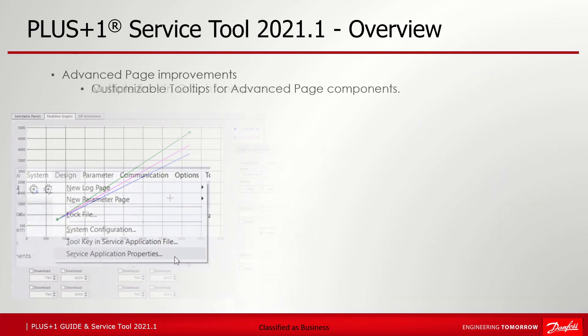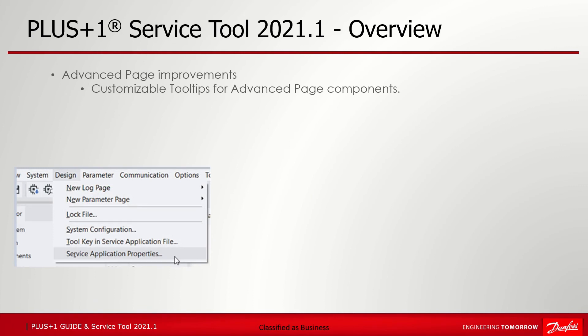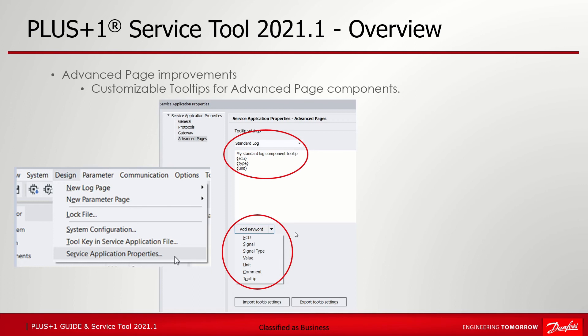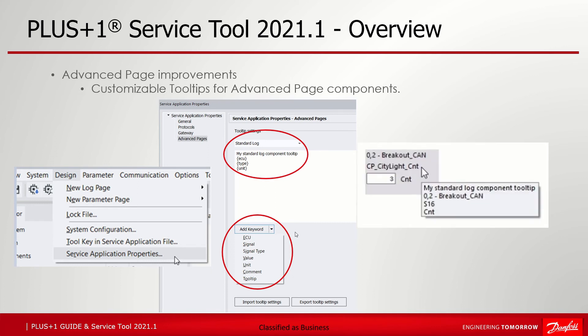Next improvement: customizable tooltips for advanced page components. The tooltips, also called hints, for all components like standard, log and bar graph have been made customizable to avoid misleading information. Under design, service application properties, which are part of the P1D, there is the selection for advanced pages tooltip settings. For each component type you can define your own tooltip. You can also add keywords which are listed and available for the selected component type, like ECU and signals. When opening existing P1Ds these settings are set to the old default static tags. For new P1Ds the default setting has no items selected for all component types. The P1D tooltip settings can be exported and imported.